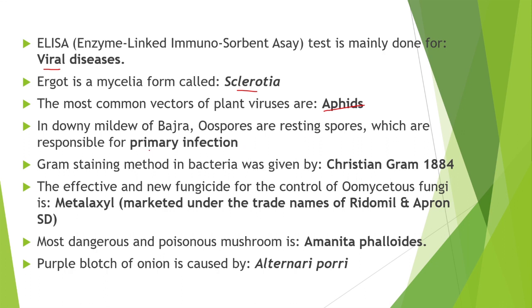In downy mildew of Bajra, oospores are resting spores responsible for primary infections. The gram staining method in bacteria was given by Christian Gram in 1884. The effective new fungicide for the control of Oomycetes fungi is metalaxyl.